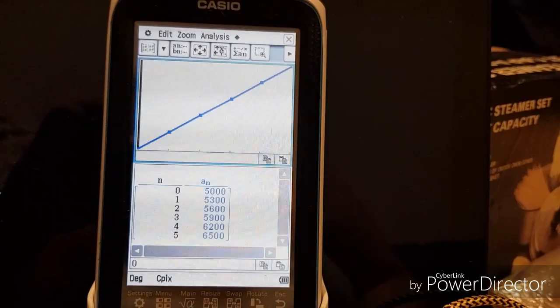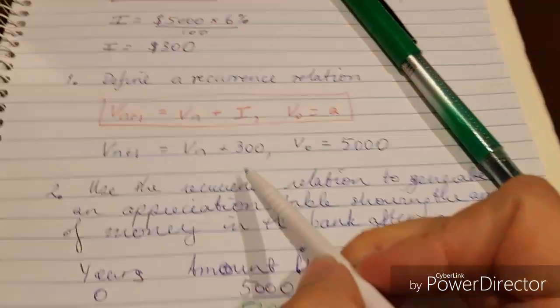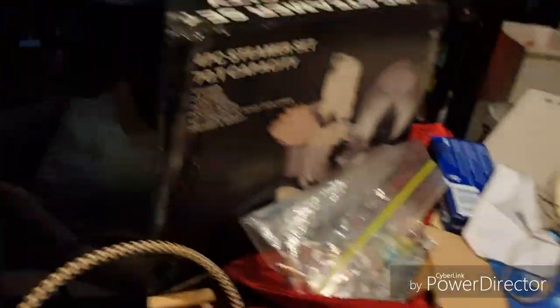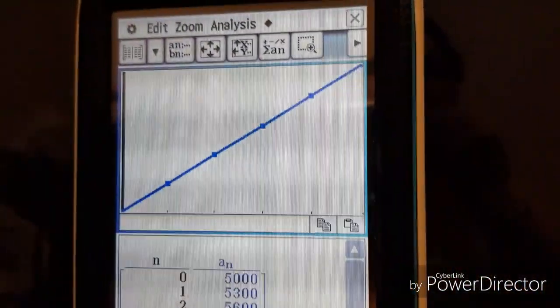Now you can see this is a linear relationship, and it's because if you think about it, go back to our recurrence relationship: we're adding the same amount each year. We're adding $300 each year. So as a result, we're going to have a linear relationship here.